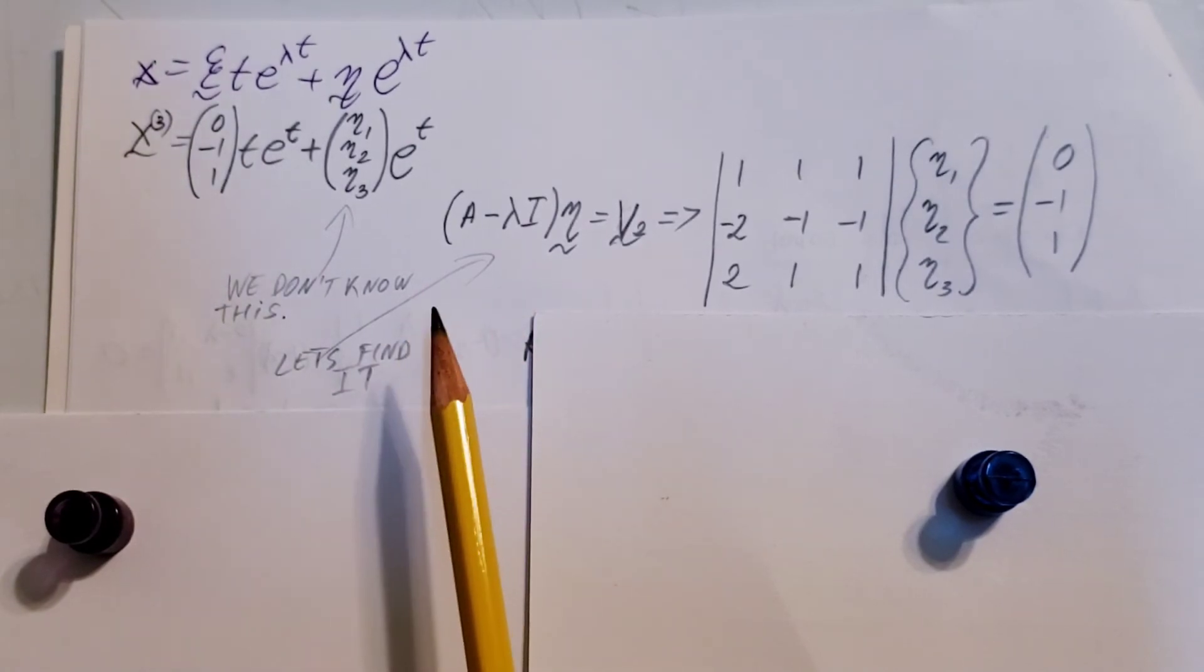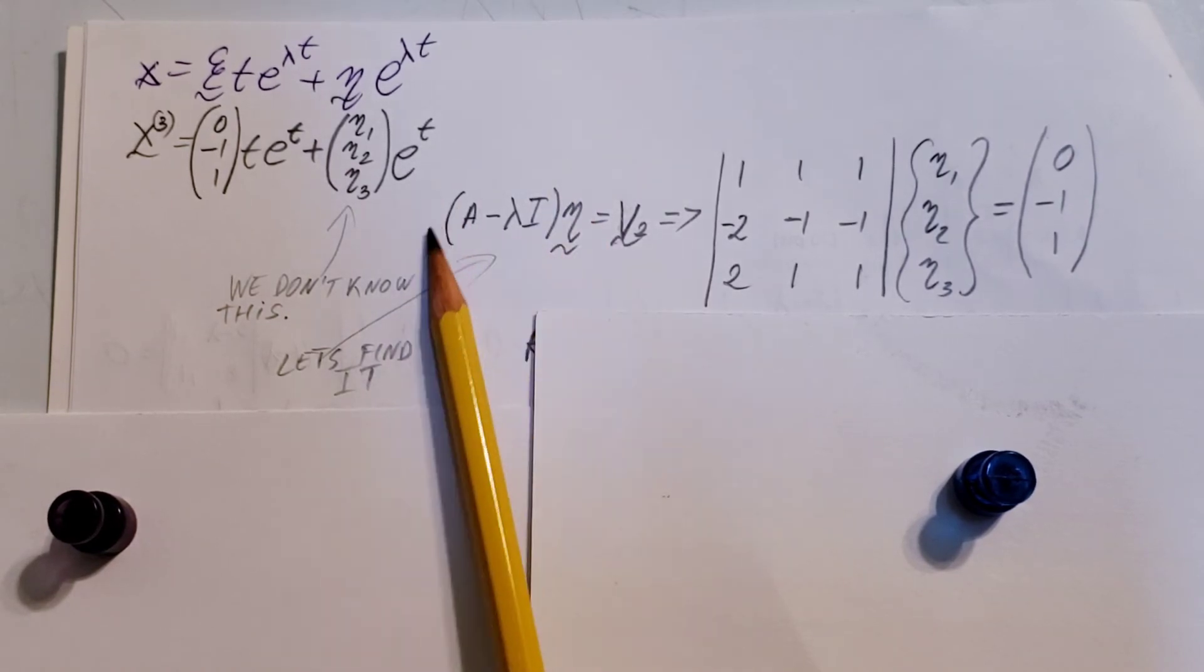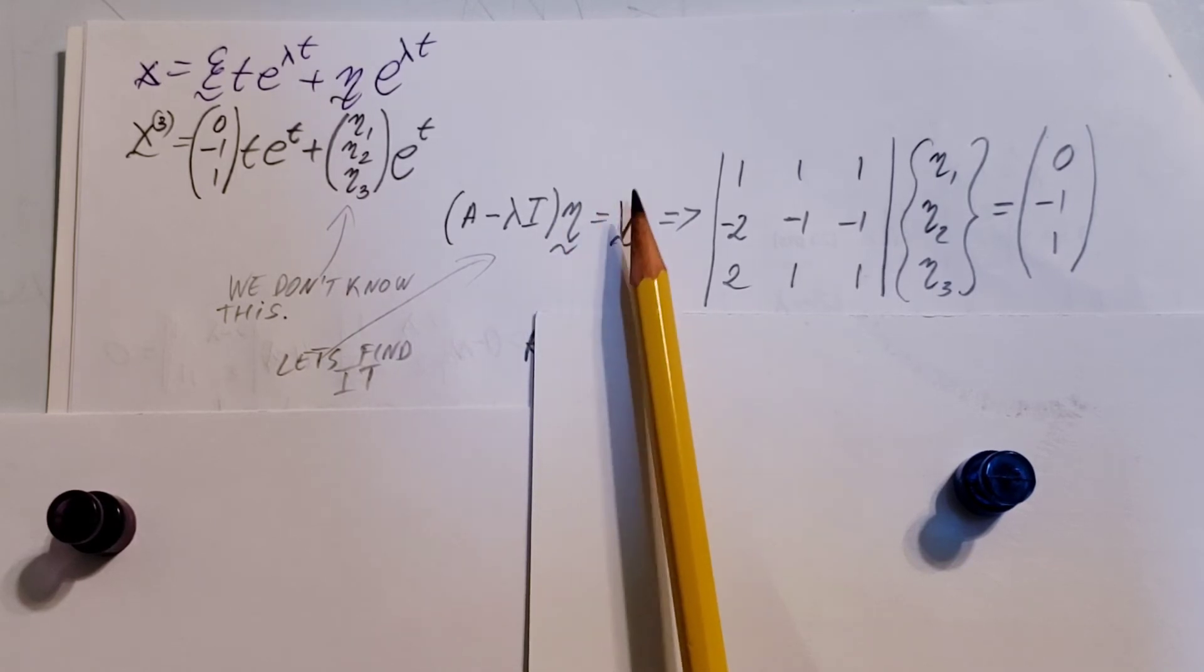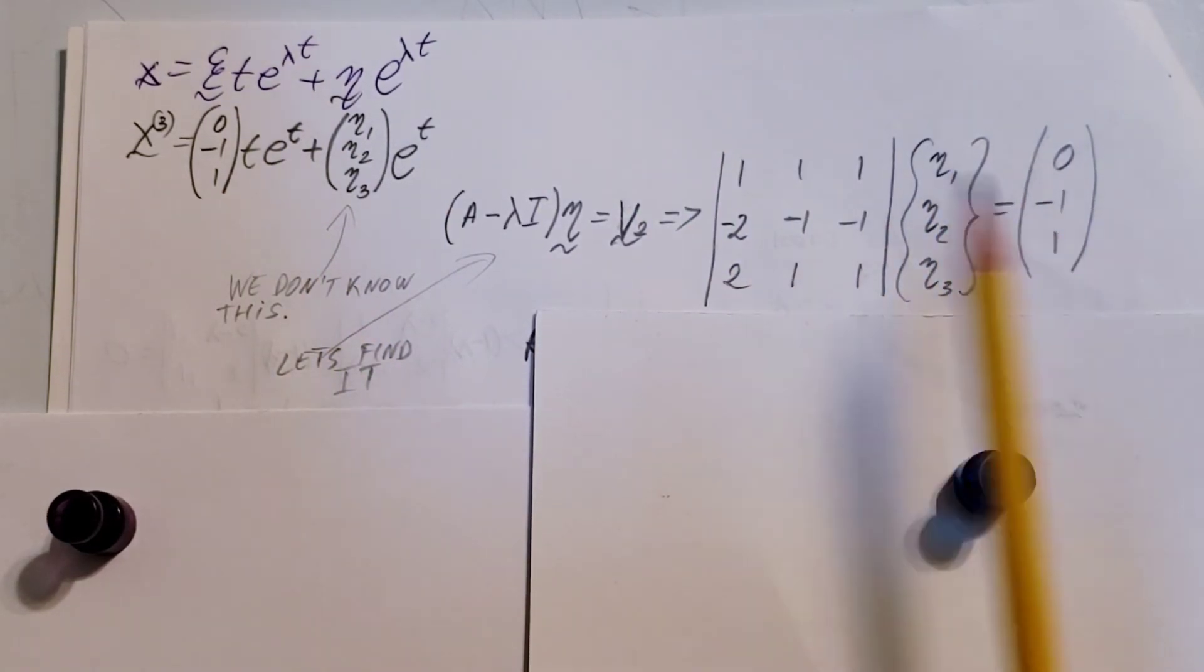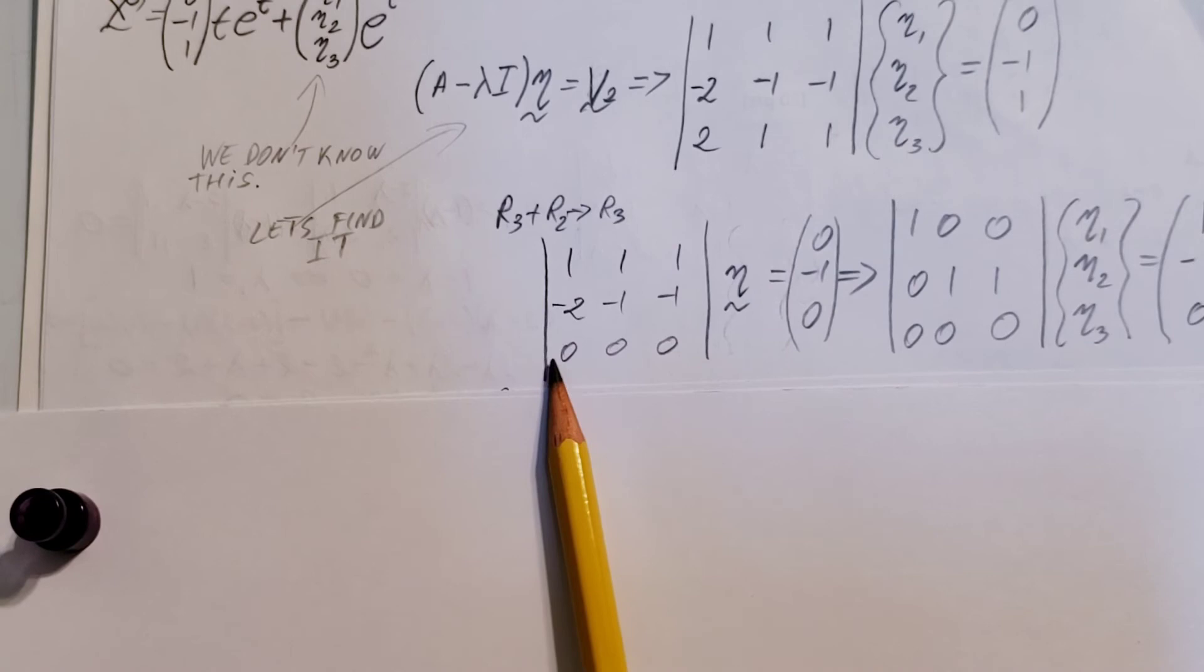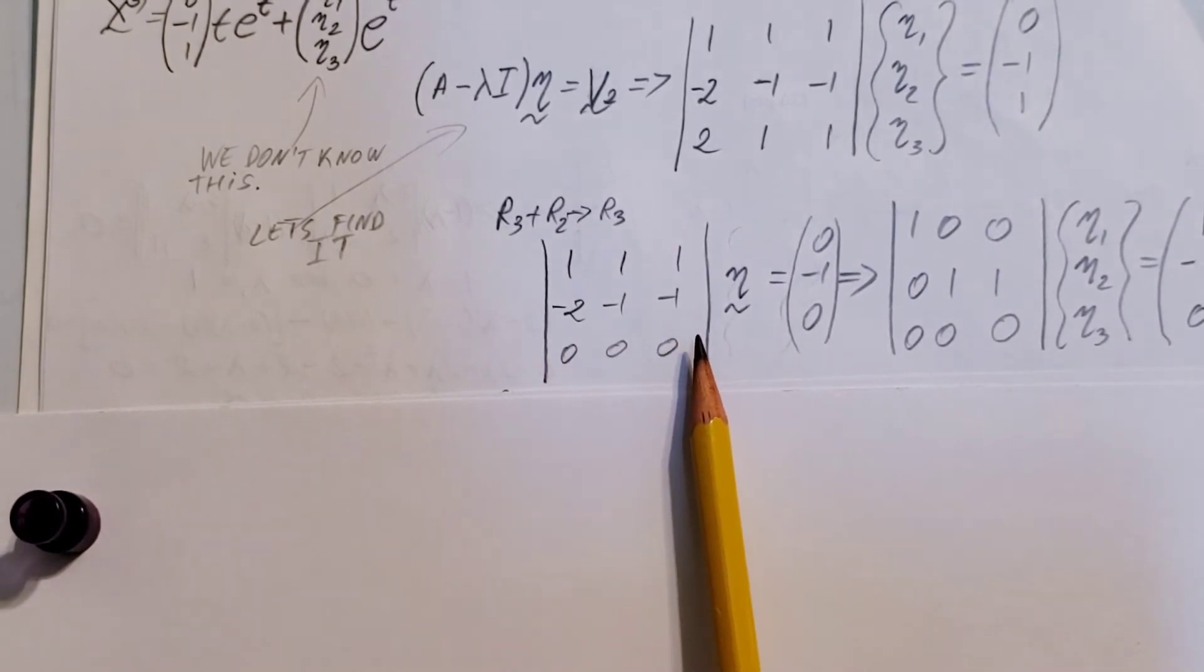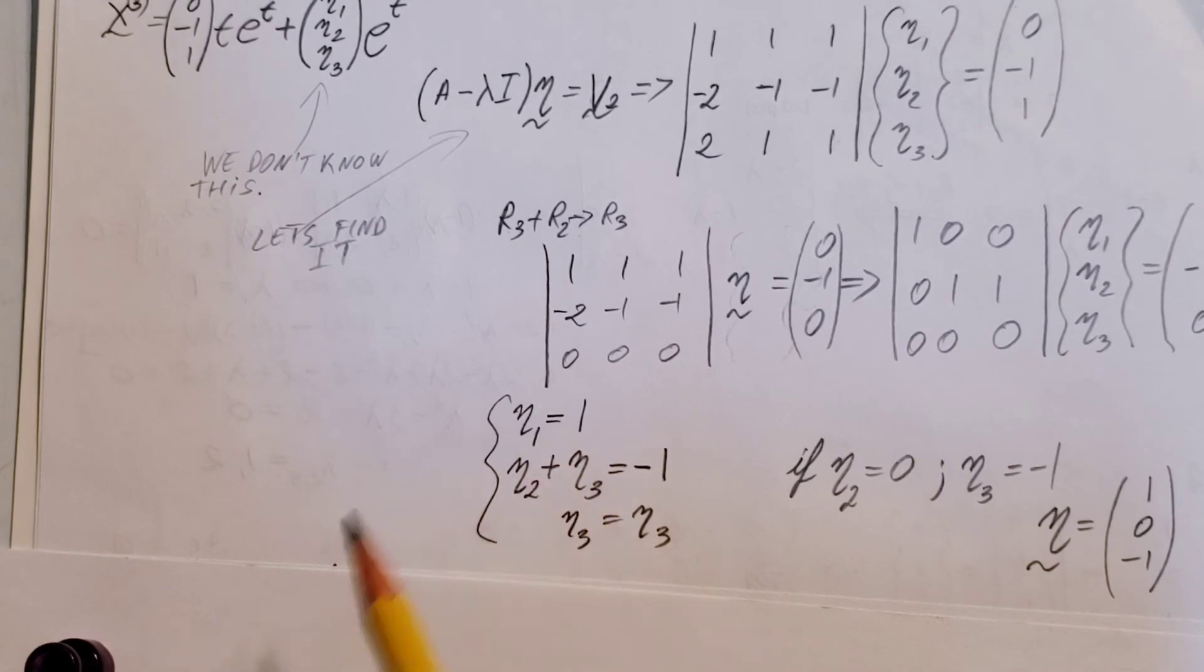And here it is, how we're gonna find our eta vector. The matrix A minus lambda I, times our eta vector, equals V2. This is this vector, the 0, negative 1, and 1. And this is what we need to solve. So, I'm gonna take the third row, add it to the second one, and write it in place of the third. This way, there will be all zeros, we have only the first two left. We're gonna turn this into equation form. Eta 1 will equal 1. The second line, eta 2 plus eta 3, equals negative 1. And in the third line, eta 3 equals eta 3, eta 3 will be arbitrary.